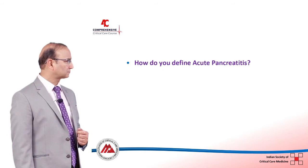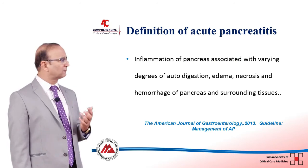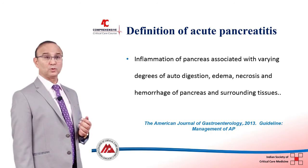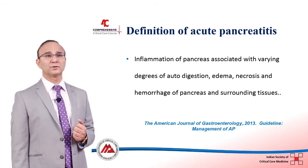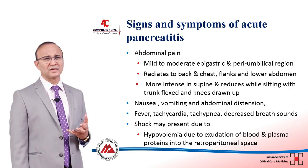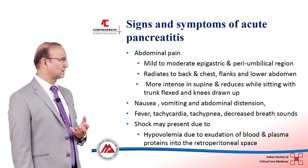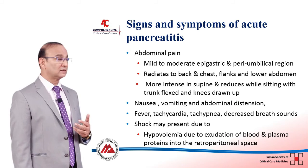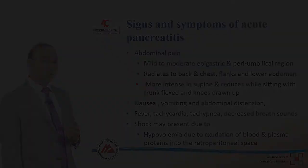How do we define pancreatitis? It is inflammation of the pancreas associated with varying degrees of autodigestion, edema, necrosis, and hemorrhage of the pancreas and the surrounding tissues. Most of the time these patients present with abdominal pain — mild to moderate epigastric pain, possibly in the peri-umbilical region, radiating to the back, and in certain patients it can radiate to the chest, flanks, or lower abdomen.